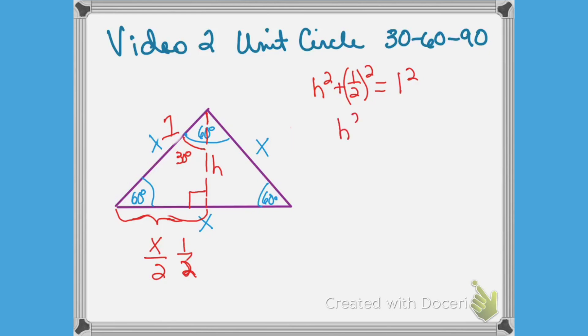And that means that h squared is equal to – I'm going to take the 1 half squared, which is 1 fourth over. So h squared is equal to 3 fourths.